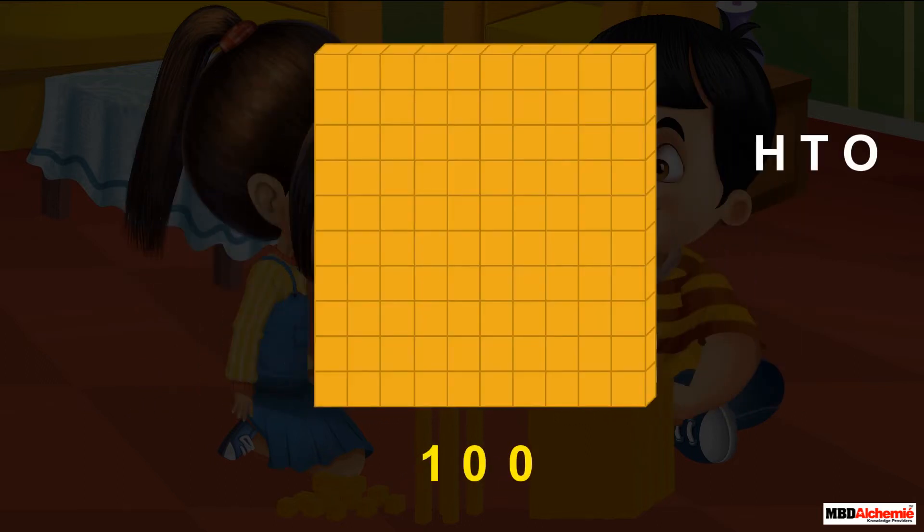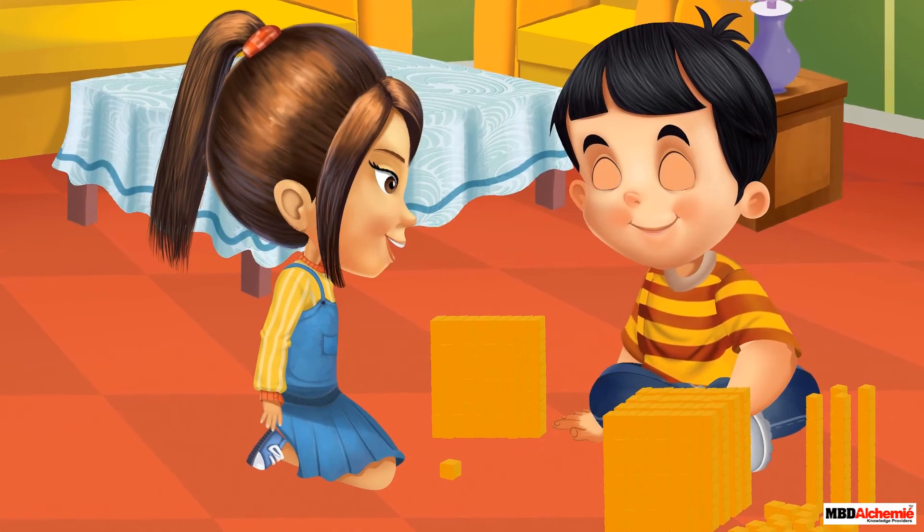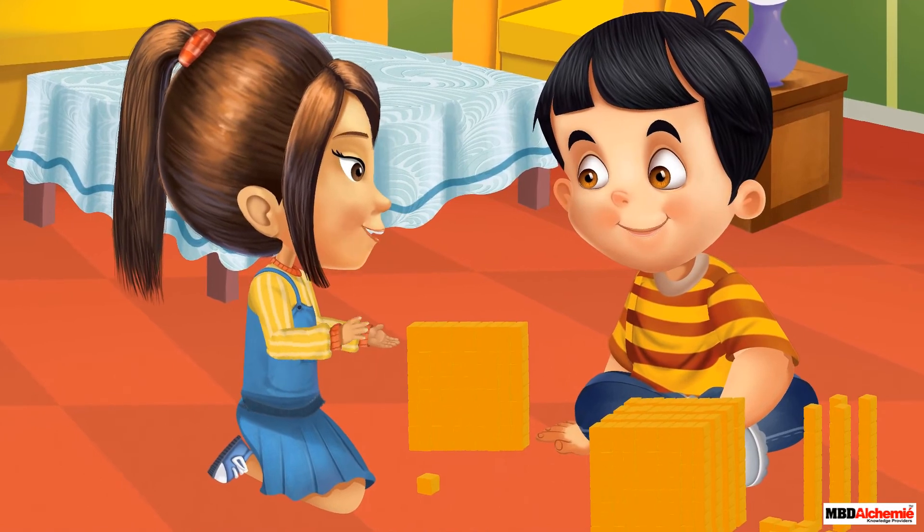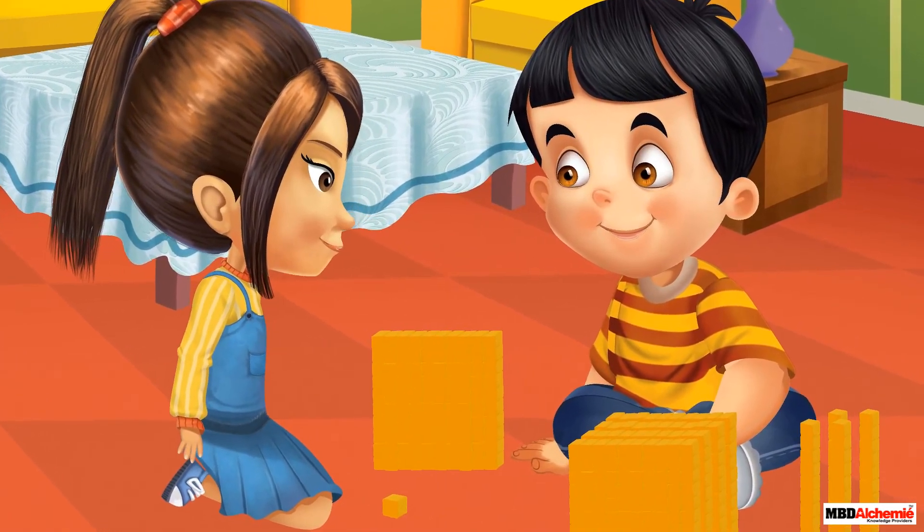2 zeros are written under one's and ten's column and 1 under hundred's column. 100 block and 1 one's block were kept near Alicia.